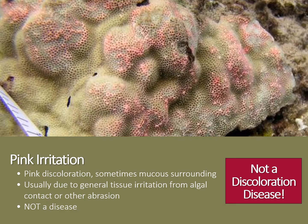When observing your local reef for possible disease, you may observe coral colonies with irregular, mottled pink sections of tissue. Please note that this condition is not a discoloration disease — it's the result of irritation to the coral, most often caused by certain types of algae contacting the coral tissue. Depending on the extent of the algal irritation and overgrowth, a coral can usually recover from this condition once the irritation subsides.